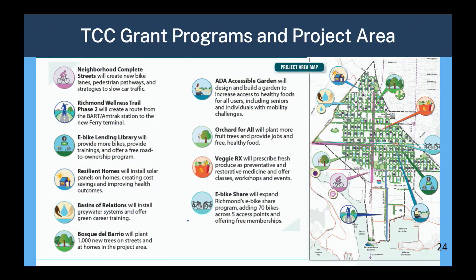The next slide shows more projects funded by this $35 million: Neighborhood Complete Streets, Richmond Wellness Trail, e-bike lending library, resilient homes, Basins of Relations, Bosque del Barrio, ADA Accessible Garden, Orchard for All, Veggie RX, and e-bike share. All these programs and projects will be funded with this $35 million grant in those neighborhoods.